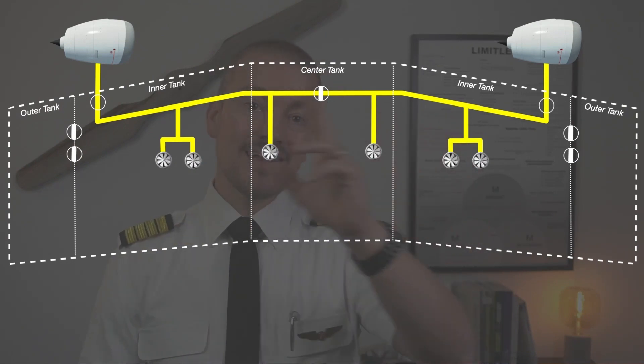The right and the left side of the fuel system is isolated from each other using a cross feed valve. The cross feed valve allows one side to feed from its own and the other side to feed from its own side.